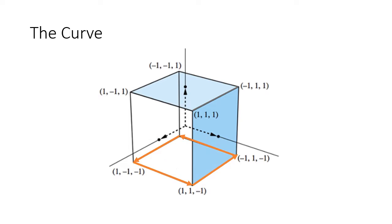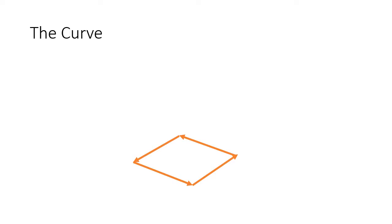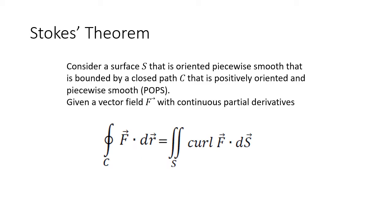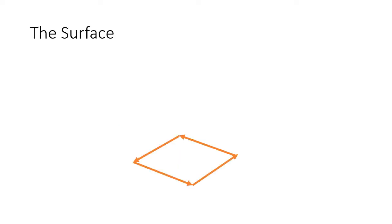So instead of the surface, now I'm looking at the curve — I don't even need the surface there. Here's my curve. And here's the genius of Stokes' Theorem, because Stokes' Theorem says if I have a closed path line integral of F dot dR, I can calculate this as a surface integral of curl of F dot dS. So instead of talking about the curve, now I need a surface. What surface is enclosed by those four line segments? Well, it's a plane.